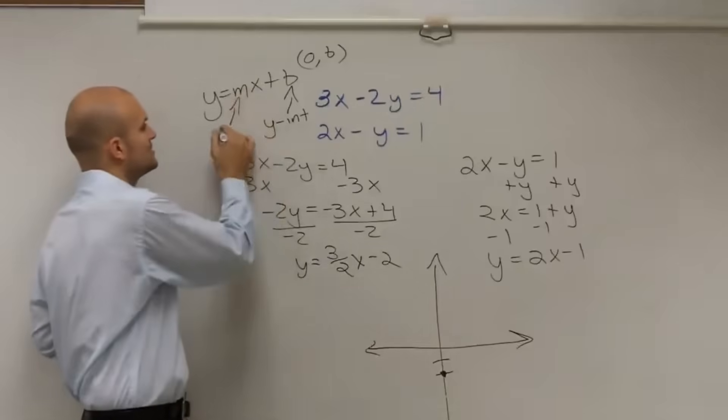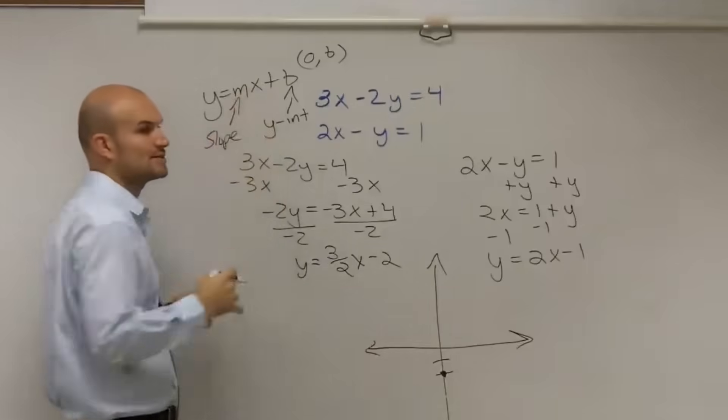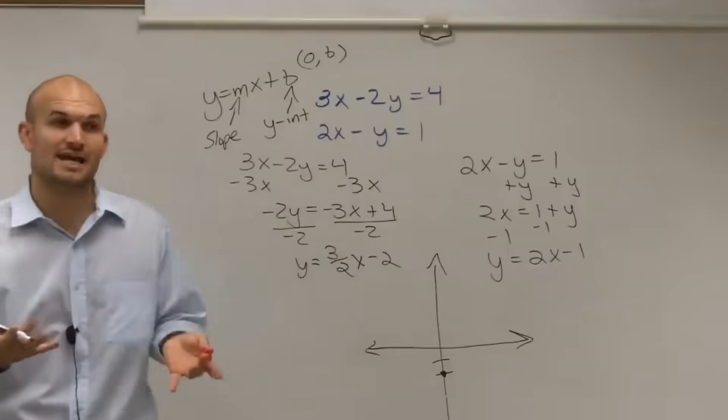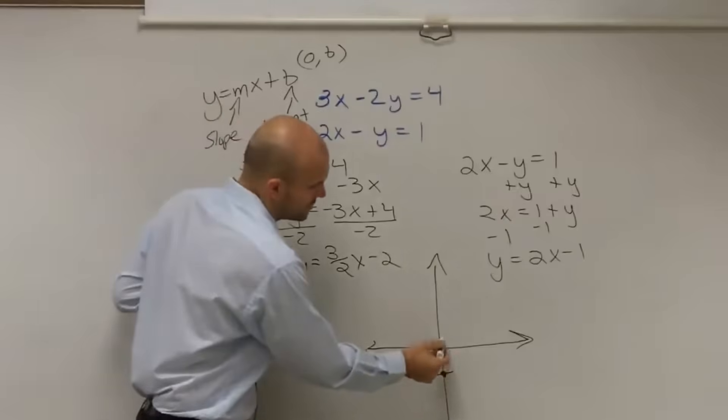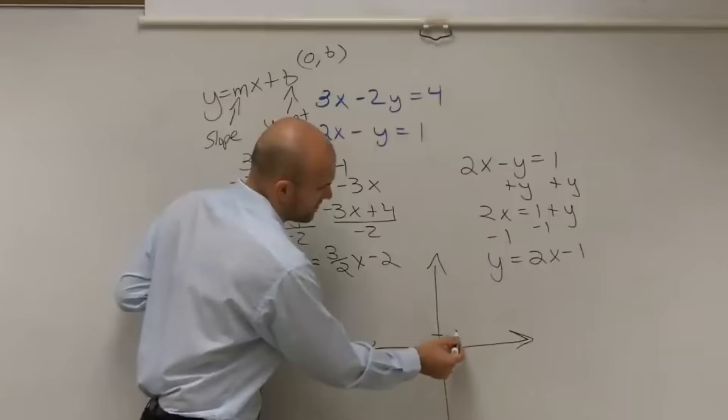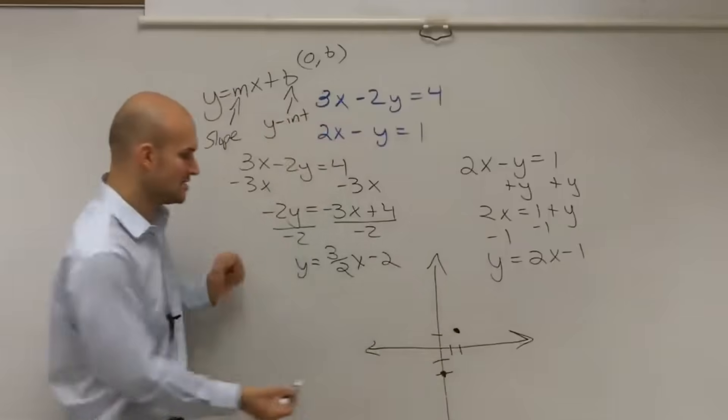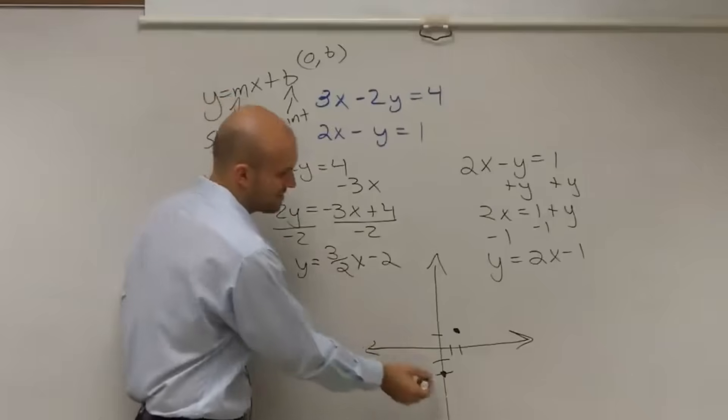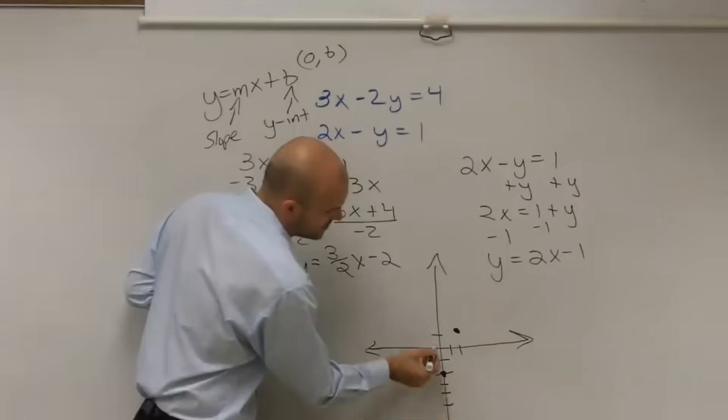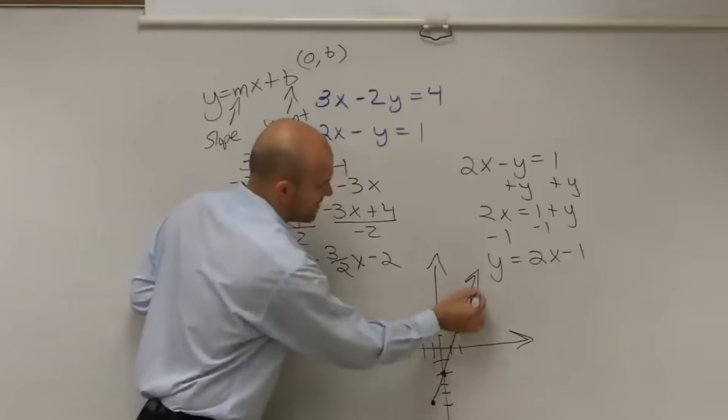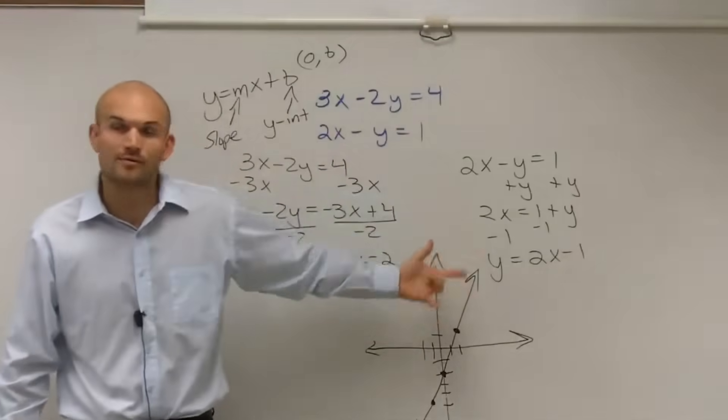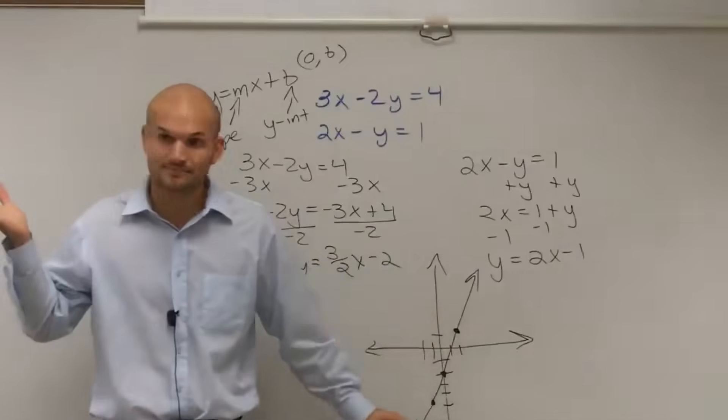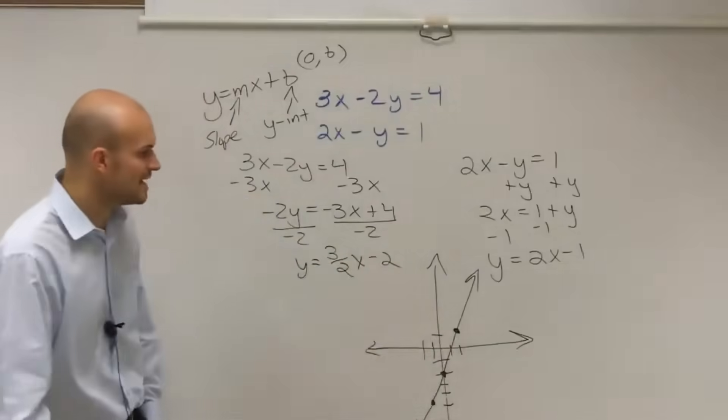Then it says my slope is going to be 3 over 2. Remember, m is your slope, which we represent as rise over run. It's the change in your y values over the change in your x values. So I'm going to go up 3, 1, 2, 3, over 2. So that's going to take me to my next point. You could also do a negative over negative because that would still be positive. You could also go down 3, 1, 2, 3, to the left 2. Then I connect my points, and I have my line. Make sure, ladies and gentlemen, I've seen a lot of people graphing and they're not putting the arrows. When we're graphing lines, they have infinite length. So make sure you create those arrows at the end.